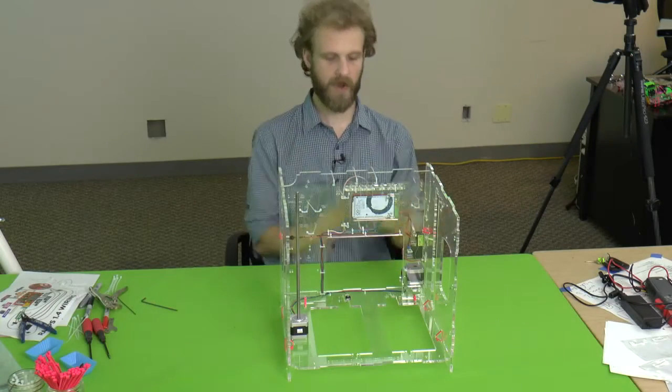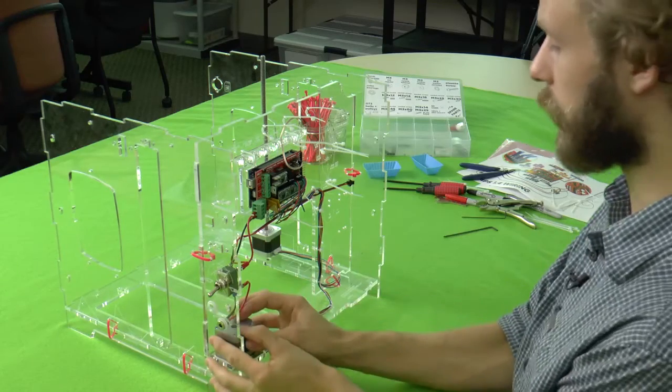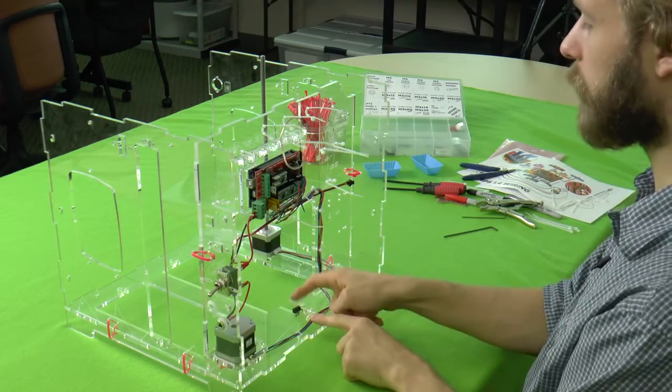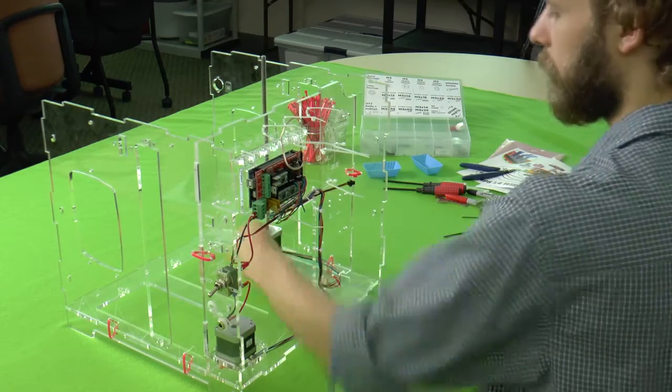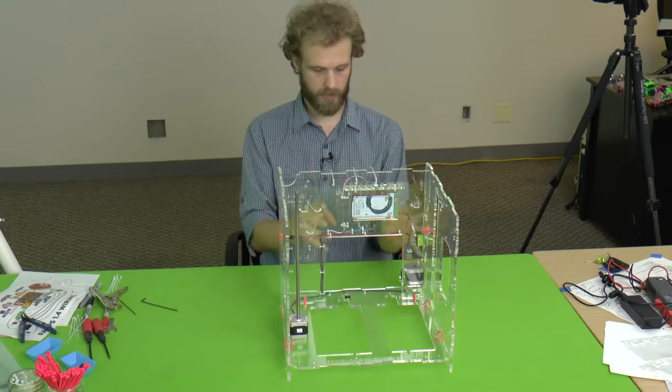In the second phase of the wiring, after we finish the power wiring, we're going to connect the Y motor, the Y end stop, and the Z motor. We're going to first put in all the components, then put in the wires, and then make it beautiful.